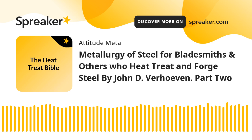In the United States most steels are classified by a code developed by the American Iron and Steel Institute (AISI). It is customary to partition steel compositions into two categories: plain carbon steels and alloy steels. In plain carbon steels, X consists only of Mn, S, and P.